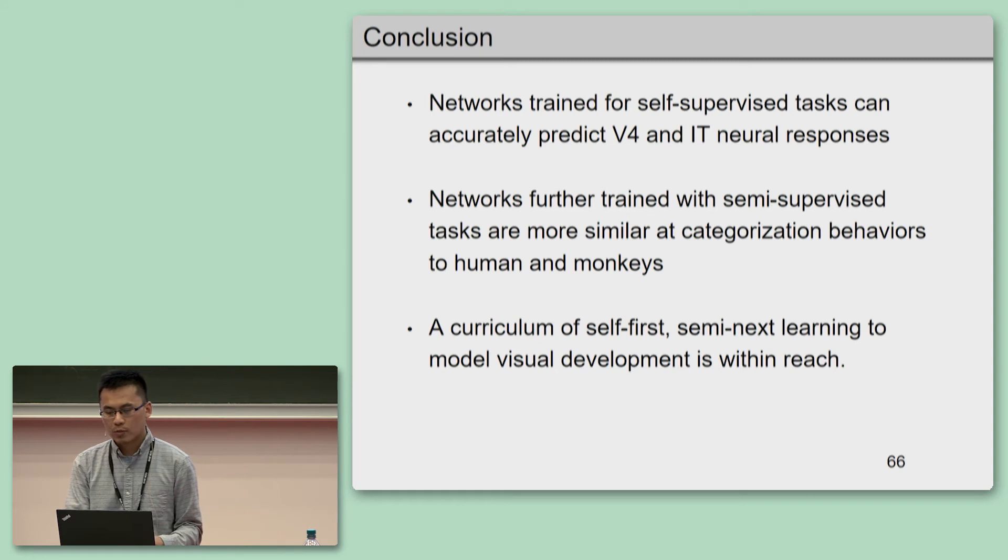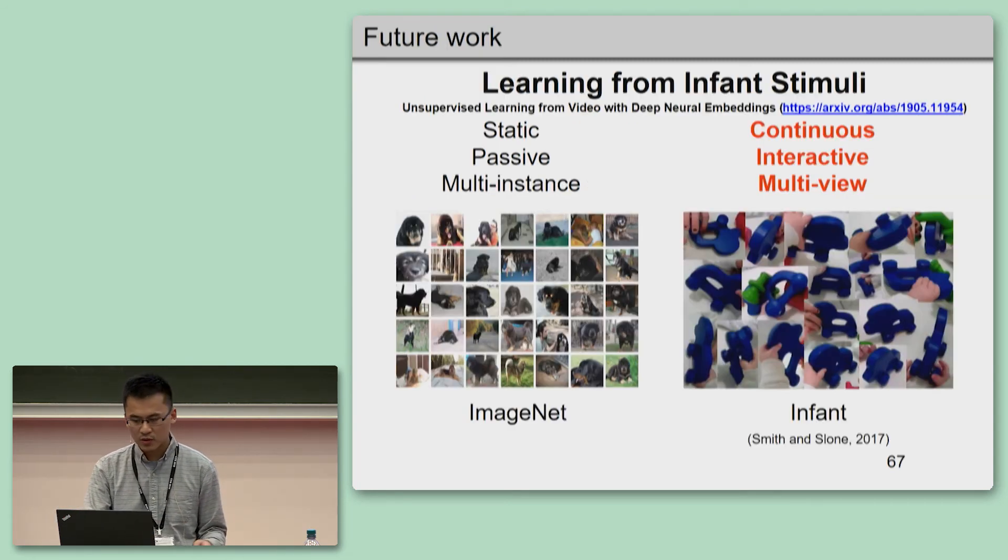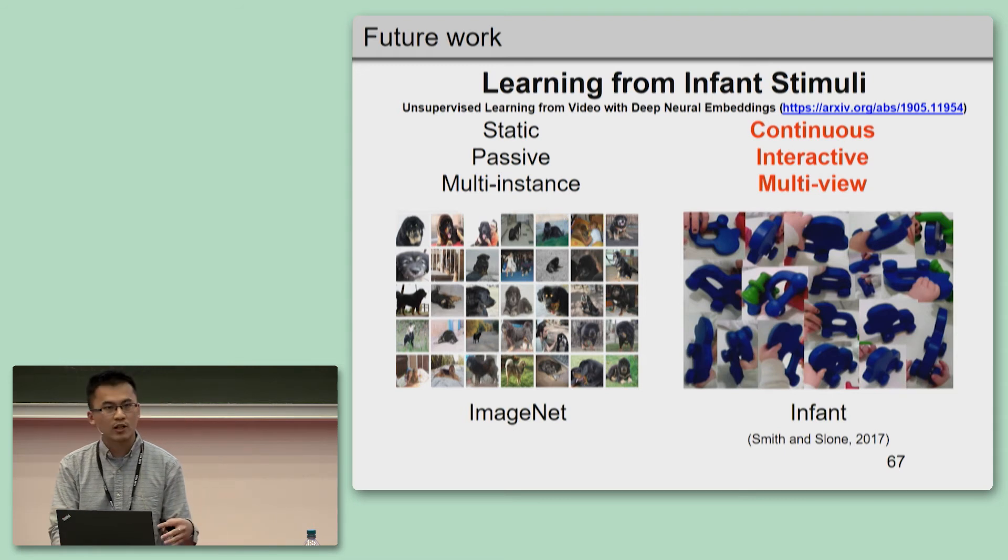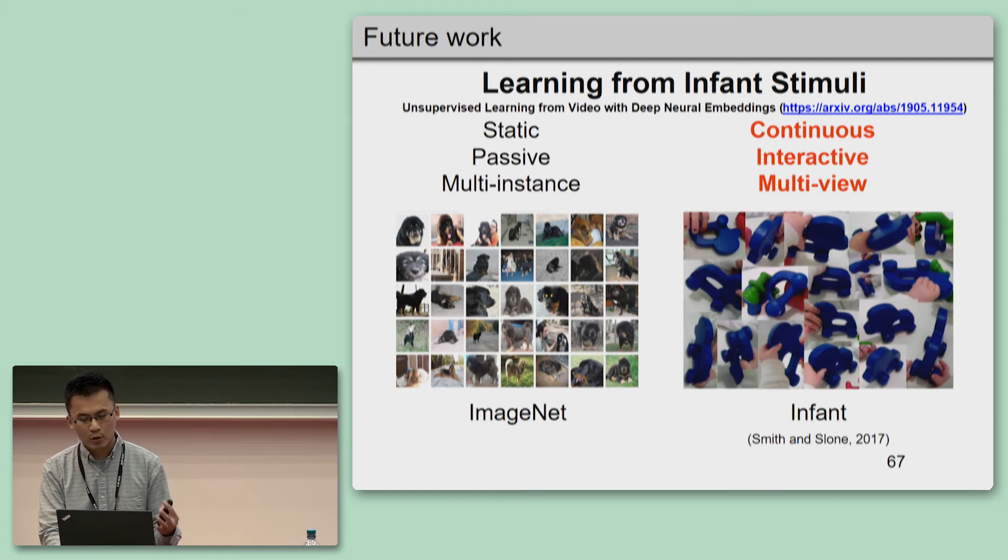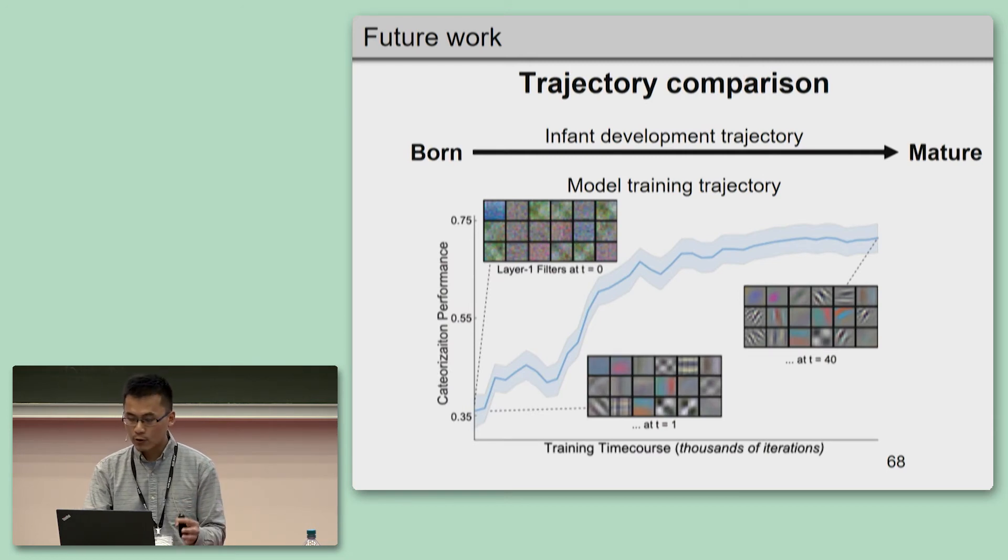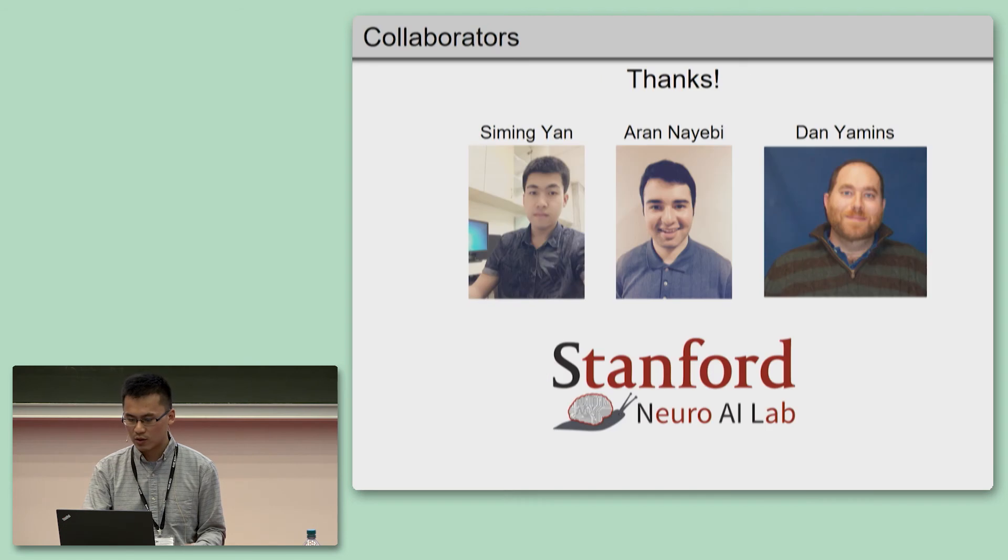In conclusion, this work proposes a network training curriculum for modeling visual developments. There are still other problems we haven't yet addressed in this curriculum. One problem is that the difference between ImageNet, the dataset we are currently using, and the stimuli that infants are actually getting. For example, ImageNet contains static images, while infants see continuous flows of images with temporal correlations. We have started addressing this problem through developing self-supervised algorithms for videos. Please check our archive paper if you have interest in that. Another future work is to do the trajectory comparison for our curriculum, meaning that we compare the intermediate points of our model training trajectory to the corresponding points of infant developmental trajectory. Ultimately, we expect that our curriculum produces a correct final model and also generates a correct intermediate points.